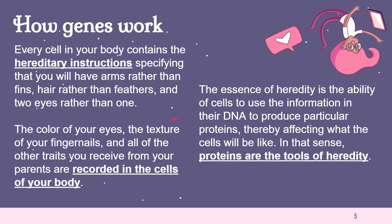Every cell in your body contains hereditary instructions — they specify that you will have arms rather than fins, hair rather than feathers, and two eyes rather than one. Everything about you: the color of your eyes, the texture of your fingernails, all the traits you receive from your parents are recorded in your cells. That hereditary instruction comes in the form of DNA. The idea of heredity is that cells have the ability to use that DNA information found in the nucleus to produce particular proteins.